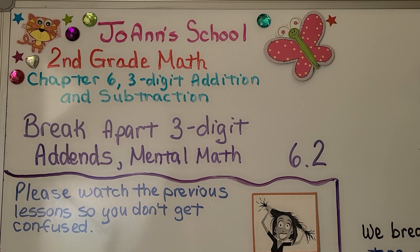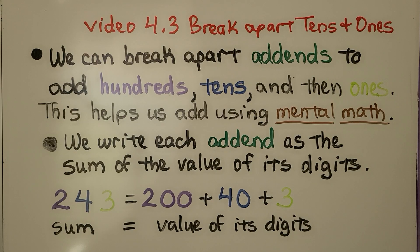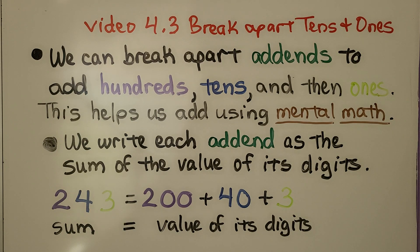Lesson 6.2: Break Apart Three-Digit Addends — Mental Math. Back in video 4.3 we had a lesson about breaking apart tens and ones. This is basically the same thing, except now we've got three-digit addends with a hundreds place, and we can break apart addends to add hundreds, tens, and ones. This helps us add using mental math.